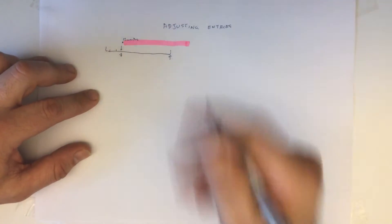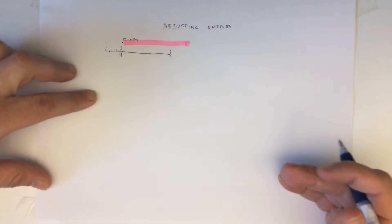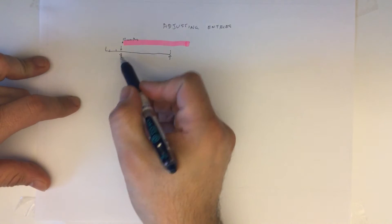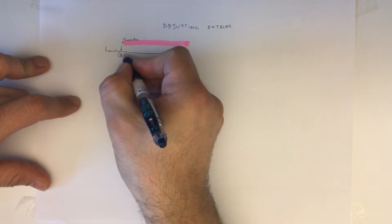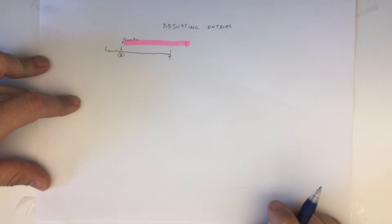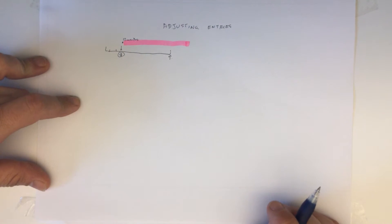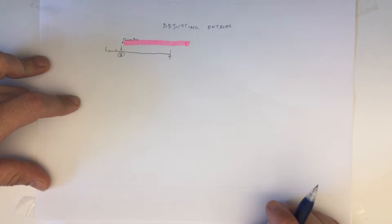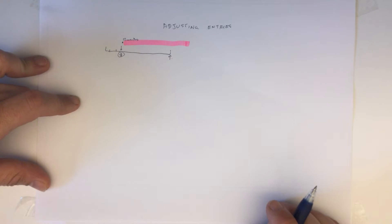So what do we need to do at the end of the year? We need to do an adjusting entry, and that depends on how the original cash flow was recorded. The question we have to ask is: how do you record that cash flow upfront?